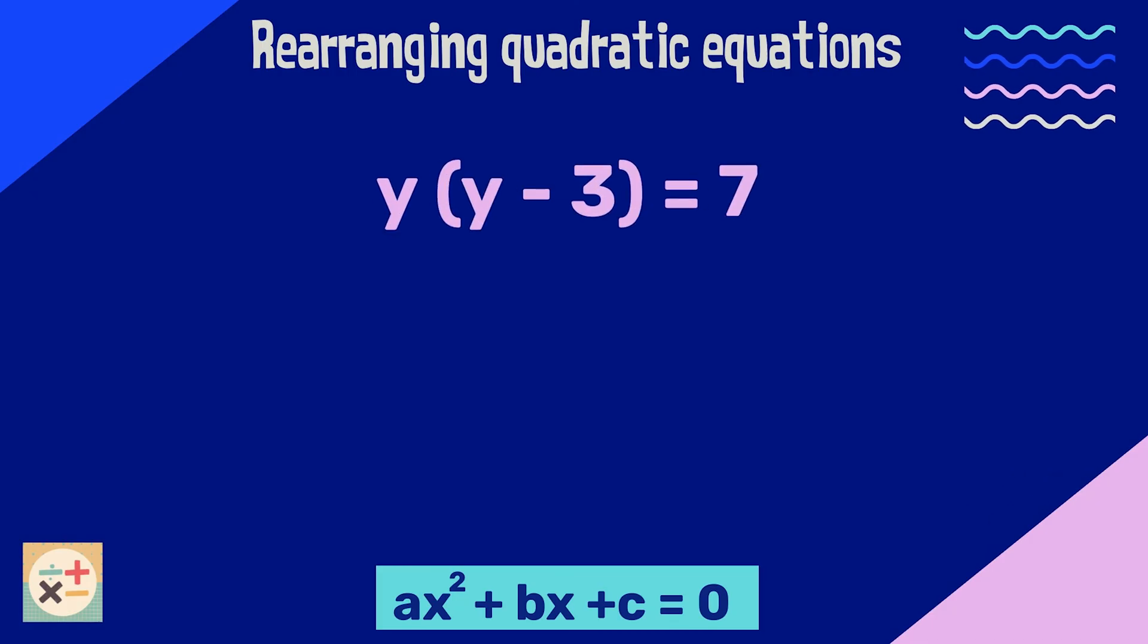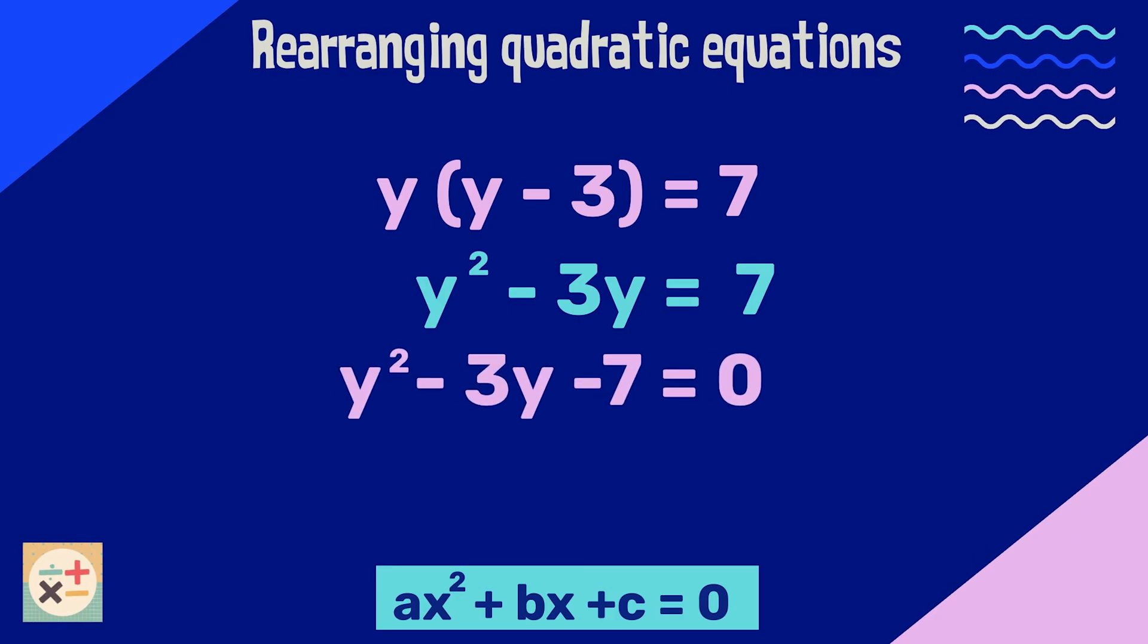This equation may not look like a quadratic at first glance, but let's multiply out the brackets. We end up with a squared y, as well as another y variable. Now we want all the terms on the left side, so we can take 7 away from both sides of the equation.